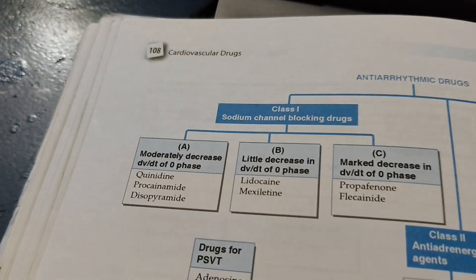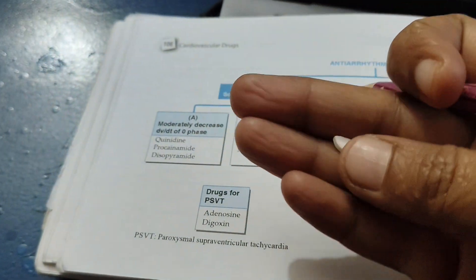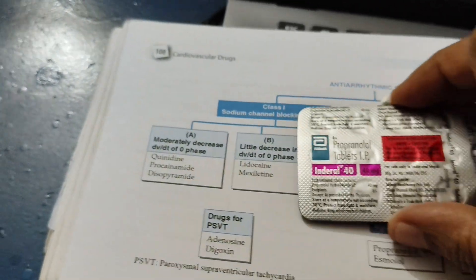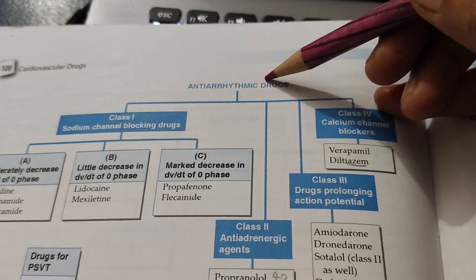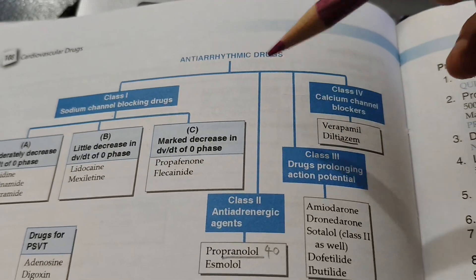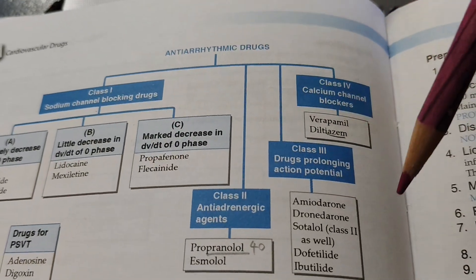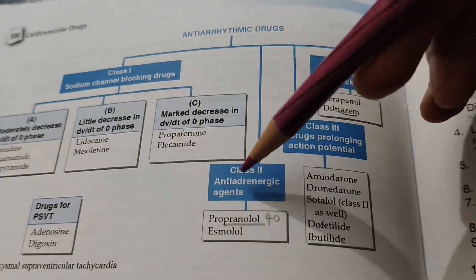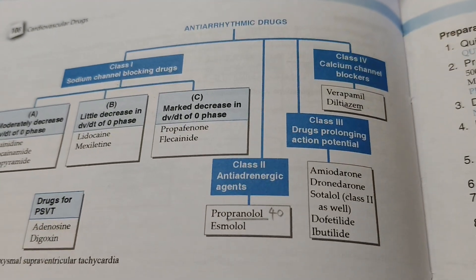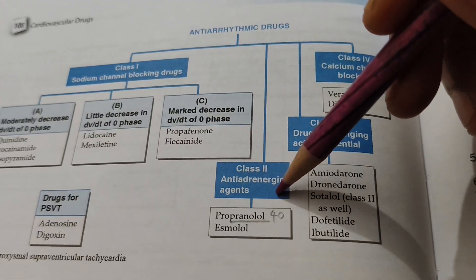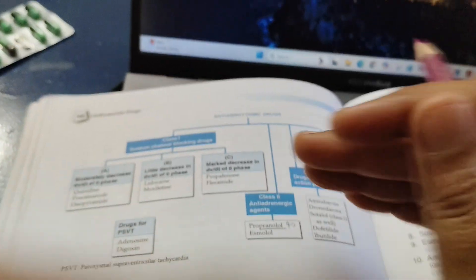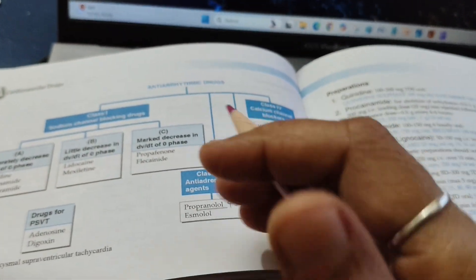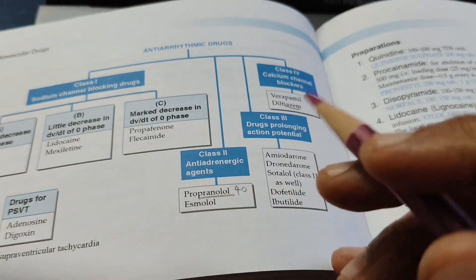One more classification: propranolol is listed in anti-arrhythmic drugs. That means it will reduce your heart rate — if your heart rhythm is not proper. Propranolol is a class 2 anti-adrenergic agent in anti-arrhythmic classification. So if somebody has hyperthyroidism and they have increased heart rate and anxiety, you give propranolol.